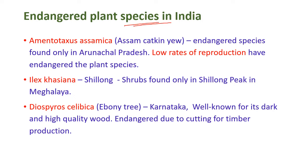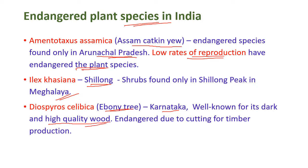The first endangered plant is Amentotaxus assamica, known as Assam catkin yew — an endangered species found only in a natural preserve, where low rates of reproduction have made it endangered. Ilex khasiana, known as the Shillong holly, is a shrub found only in Shillong Peak in Meghalaya. Diospyros celibica, the ebony tree, is found in Karnataka and is endangered due to cutting for its valuable timber.